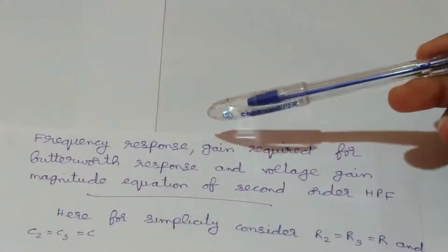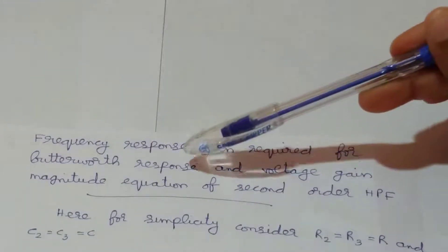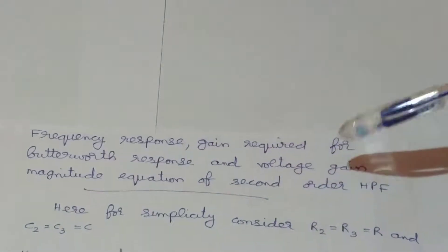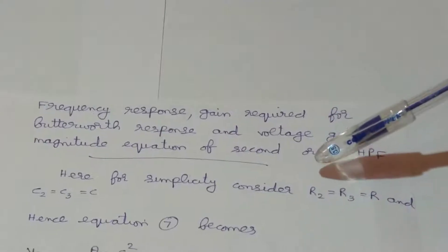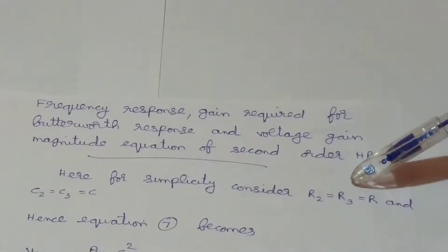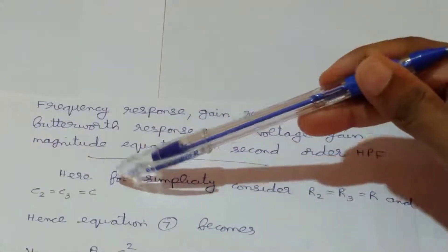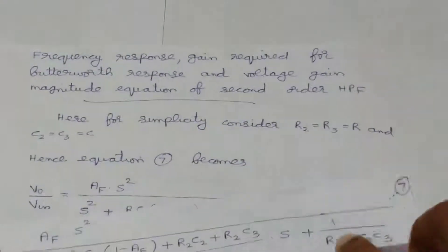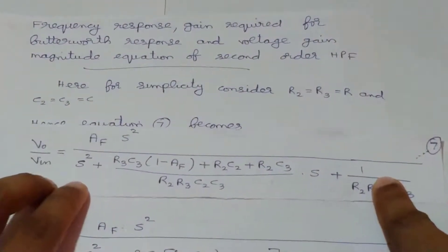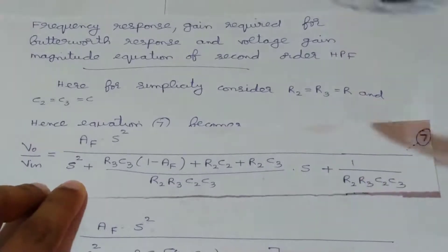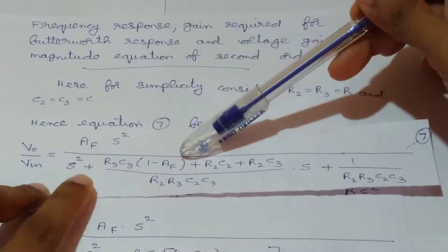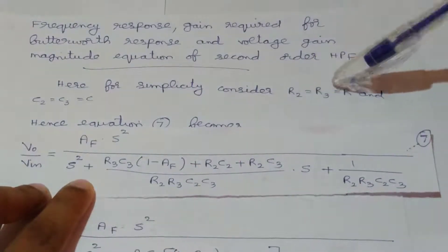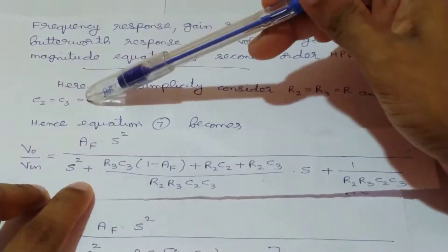Now let's consider the frequency response gain required for Butterworth response and the voltage gain magnitude equation. For simplicity, assume R2 = R3 = R and C2 = C3 = C. Substituting these conditions into Equation 7 gives a simplified Vout/Vin equation.